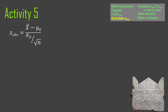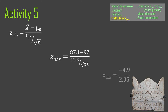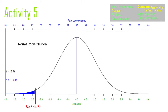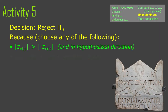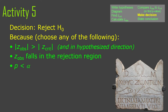Now we calculate the observed z-value by plugging in our values: the difference between our sample mean and the null hypothesis mean divided by the standard error. We get negative 2.39. That's looking pretty good — negative 2.33 was the number to beat, and our observed value is negative 2.39. That gives us a p-value of less than 0.01. The computer gives 0.0084, but all you need to know is p is less than 0.01, so we reject the null hypothesis.